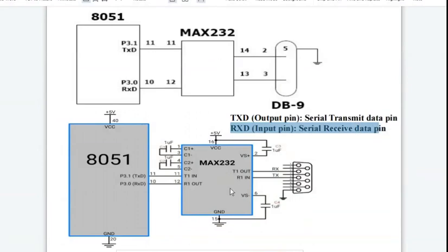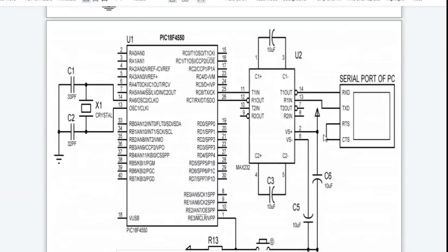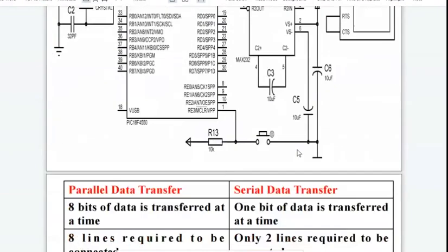MAX-232 is a voltage converter IC and the figure shows the interfacing diagram of UART or serial port of computer with PIC-18F controller. Only two pins of controller are used, TXD and RXD. Two pins of computer are used here, TXD and RXD. This is a very simple interfacing diagram for UART communication.